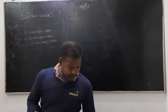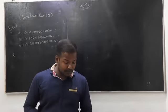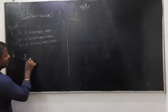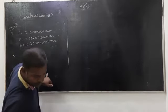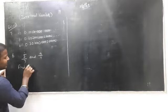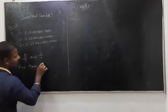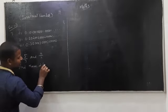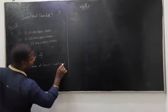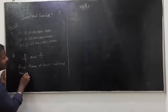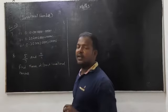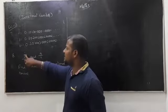Problem 8: Find three different irrational numbers between the rational numbers 5/7 and 9/11. First, we want to find the decimal value of 5/7. How can we find it? We do long division: 5 divided by 7.